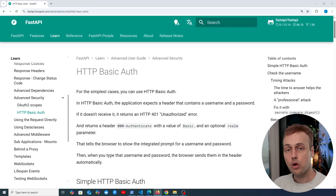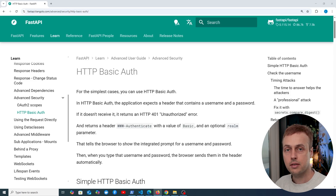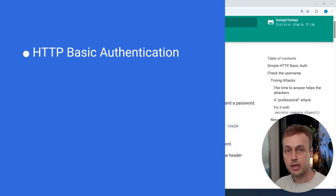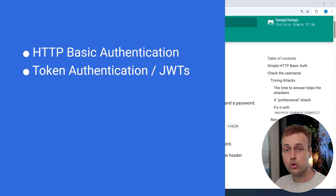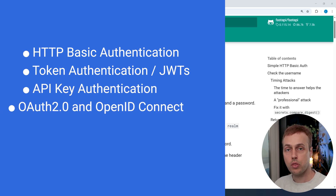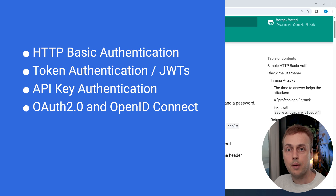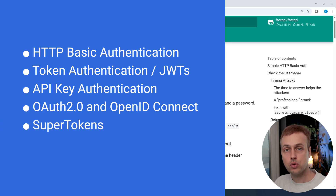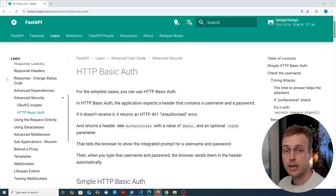I want to do a set of videos on authentication with FastAPI, covering different scenarios for authenticating. We'll look at things like basic authentication, stateful and stateless token authentication including JSON web tokens, API key authentication, and also OAuth2 and OpenID Connect. We're also going to do an integration with SuperTokens in a future video. I want to dive into the core concepts of authentication with FastAPI and look at the pros and cons of each of these.